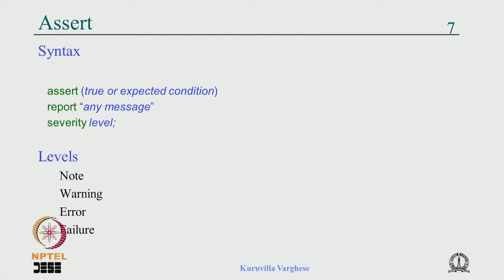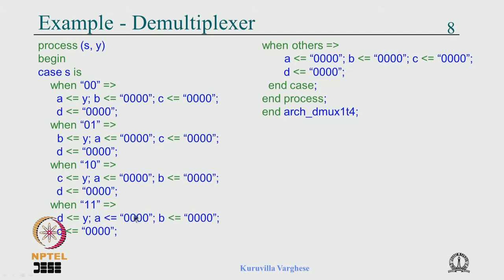We then started examples. The VHDL code for a demultiplexer: S is the select line, Y is the input, and A, B, C, D are the outputs. When S is '00', Y goes to A and the rest are 0; '01', Y goes to B; and so on. This is the ideal coding for the demultiplexer because there is no priority and for all select line values the output is specified. All outputs are a function of the same S and Y, so it is nice to combine them this way.